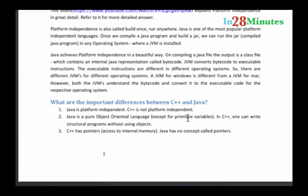So that's a difference between Java and C++. The next one is C++ has pointers, same as C. It has pointers where you can directly access the content of internal memory using these pointers.